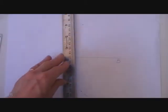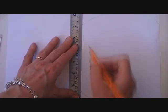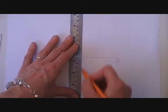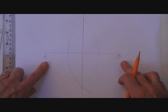And with my ruler I'm going to join up those two points. That's my perpendicular bisector of the line segment AB.